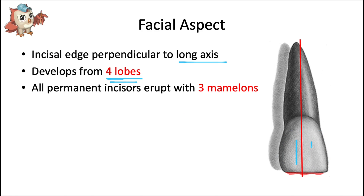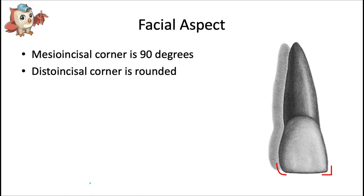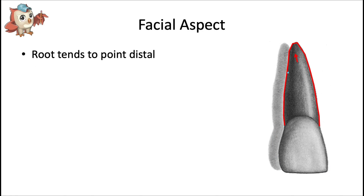Those three facial lobes manifest in the crown as three little bulges on the facial surface with little ripples in between called developmental depressions. There are also mamelons — little bumps along the incisal edge — though they're usually not visible because they wear away with normal wear by age 10. These bumps correspond to each of the three developmental lobes. The mesial incisal corner is sharper, roughly 90 degrees, whereas the distal incisal corner is more rounded. The distal surface — both root and crown — is more curved and convex, which is true for most teeth. The root also tends to point in a distal direction.